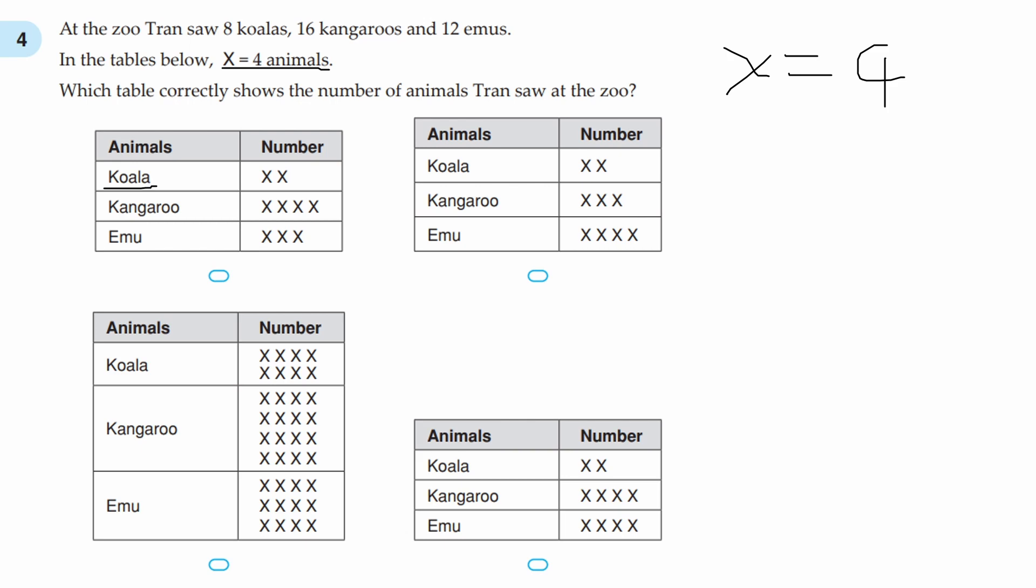koala, there are 2 X's, and there are 8 koalas. Because X is 4, the 2 X's times by 4 is 8, so that's correct, there are 8 koalas. And if we look at the kangaroos, there are 4 X's, and there are 16 kangaroos. The 4 kangaroos times by the 4 X's is 16, which is correct.